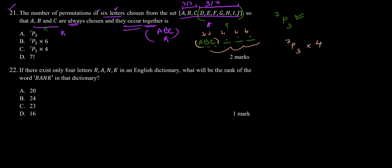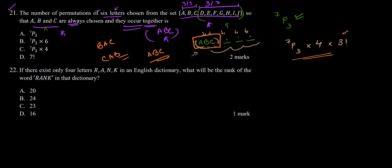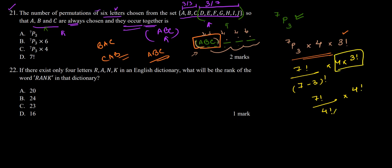So our total permutation will be 7P3 multiplied by 4 factorial arrangements of the 4 elements, and then again 3 factorial. The 3 factorial accounts for A, B, C — we haven't said they have to be in this order only; they can be B, A, C or C, A, B or any other arrangement, giving 6 ways which is 3 factorial. So the answer is 7P3 × 4 × 3!, which equals 7!/4! × 4 × 3! = 7!/4! × 4! = 7 factorial. Checking the options, option D gives 7 factorial, so option D is the correct answer.